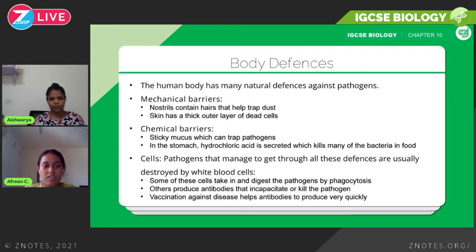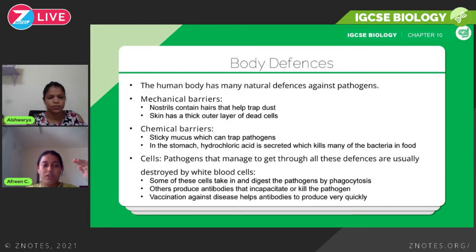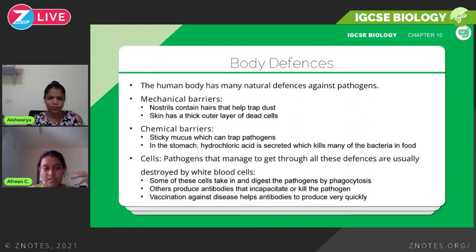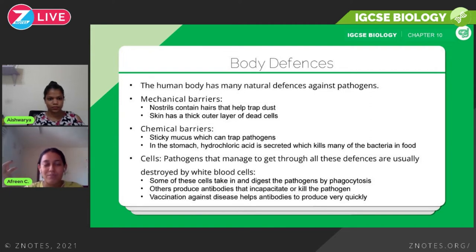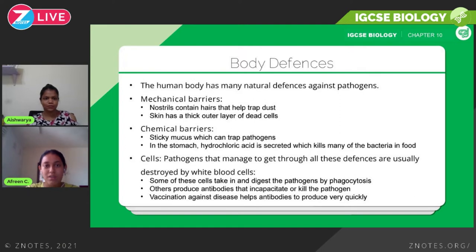Now we're looking at body defenses. There are three main ways our bodies defend against pathogens: mechanical barriers, chemical barriers, and specialized cells. Starting with mechanical barriers — the nostrils contain hair that physically traps dust, which can carry microorganisms or cause allergic reactions. This is why nose hair serves an important biological purpose.